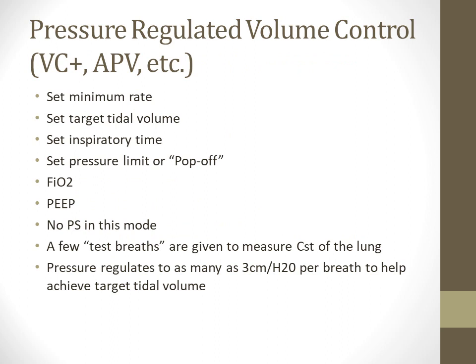With PRVC or VC+/APV, you set the rate, target tidal volume, inspiratory time, and a pressure limit or pop-off pressure, FiO2, and PEEP. The patient is given a few test breaths to help achieve target tidal volume. The general consensus is you're delivering a target tidal volume at the lowest possible pressure. That's why the pressure regulates itself — it's part of the lung protective ventilation measures that ventilator manufacturers moved toward as technology advanced.